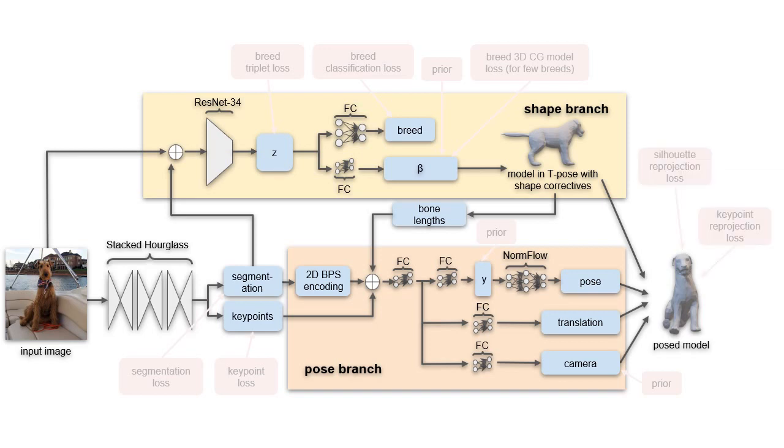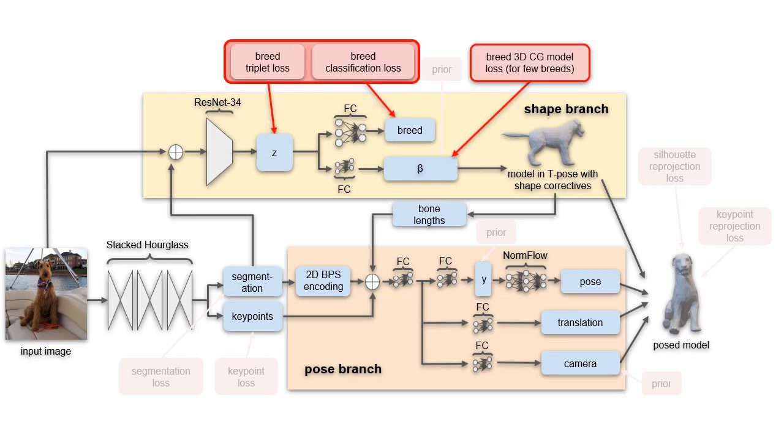Our main novelty, though, comes from utilizing breed information. We introduced three breed-related losses. One of them is optional and can be used if breed-specific 3D models are available for some breeds. The other two losses work together and are summarized as the breed similarity loss.